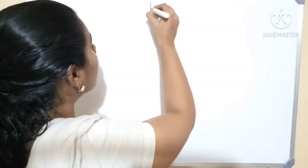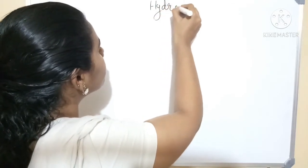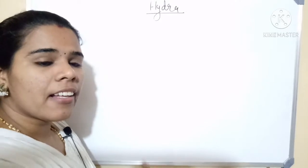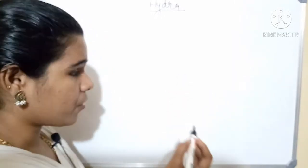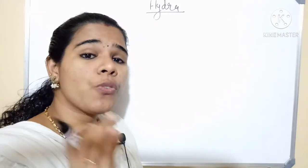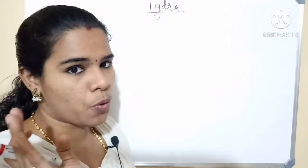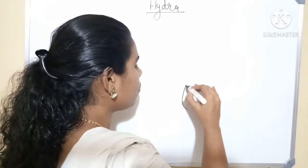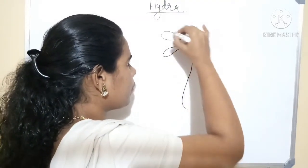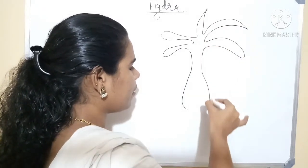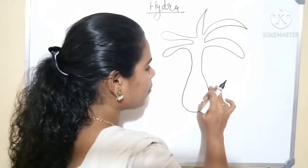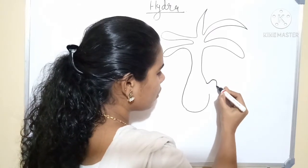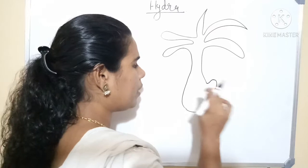Let's discuss about Hydra first — asexual reproduction in Hydra. When we draw a picture of Hydra, it is a very microscopic structure, so we need a microscope to observe it. We can only see the structure of Hydra through a microscope. When we draw the structure of Hydra, this is what it looks like.